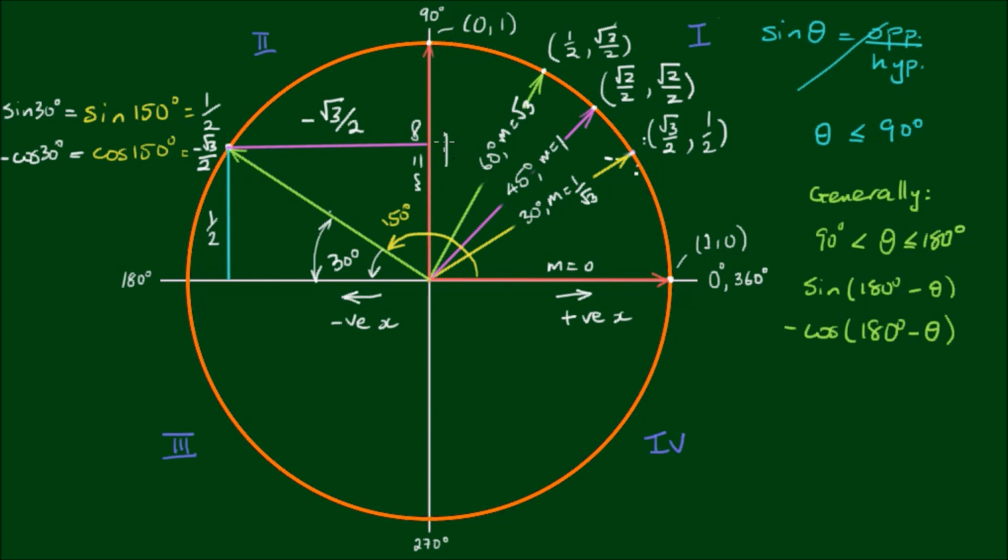Bear in mind, in quadrants 1 and 2, we are in the positive y region. And in quadrants 3 and 4, we are in the negative y region. In quadrant 1, both cosine and sine should be positive. In quadrant 2, cosine would be negative and sine would be positive. In quadrant 3, cosine and sine would be both negative. And in quadrant 4, cosine would be positive and sine would be negative.